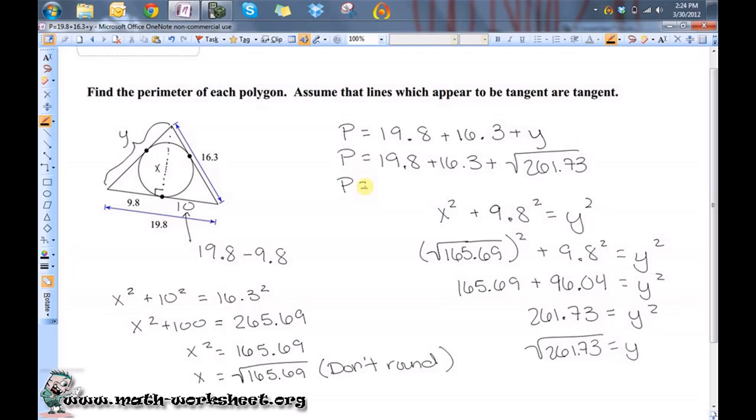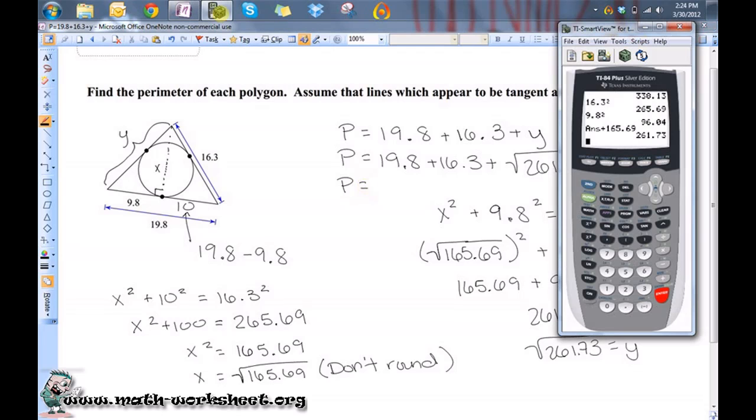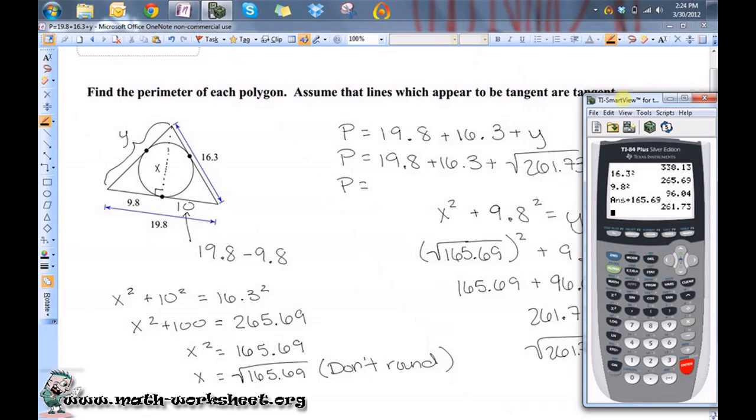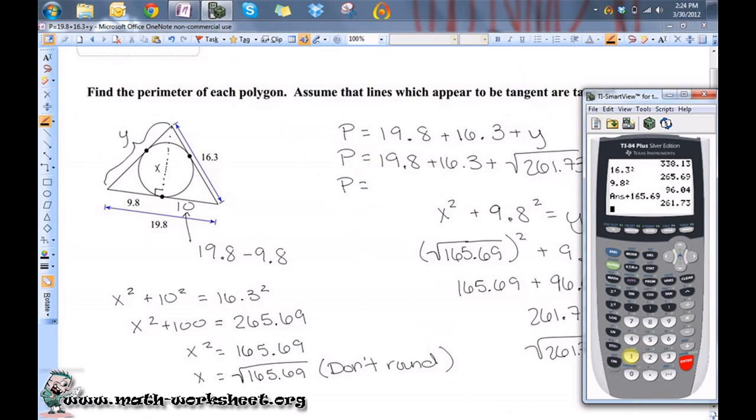That will keep me from having any intermediate rounding errors. It's best to try to round only at the end to save yourself from having any problems with your final answer. Plus, my calculator will totally let me just put all of this in here, so it won't be a big deal to leave it like that.